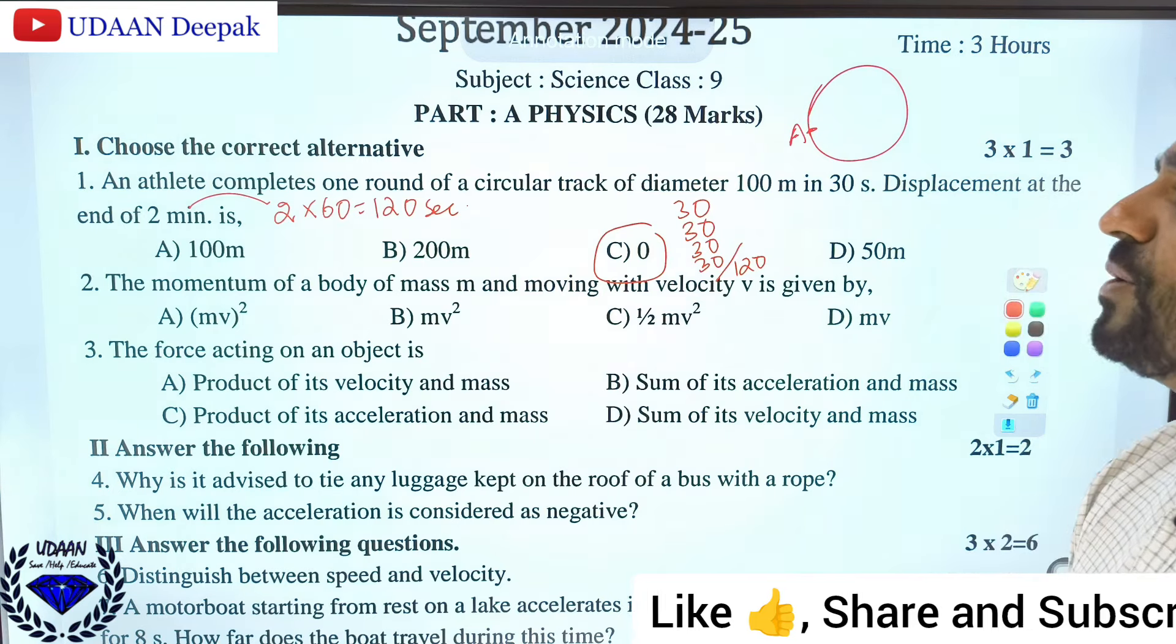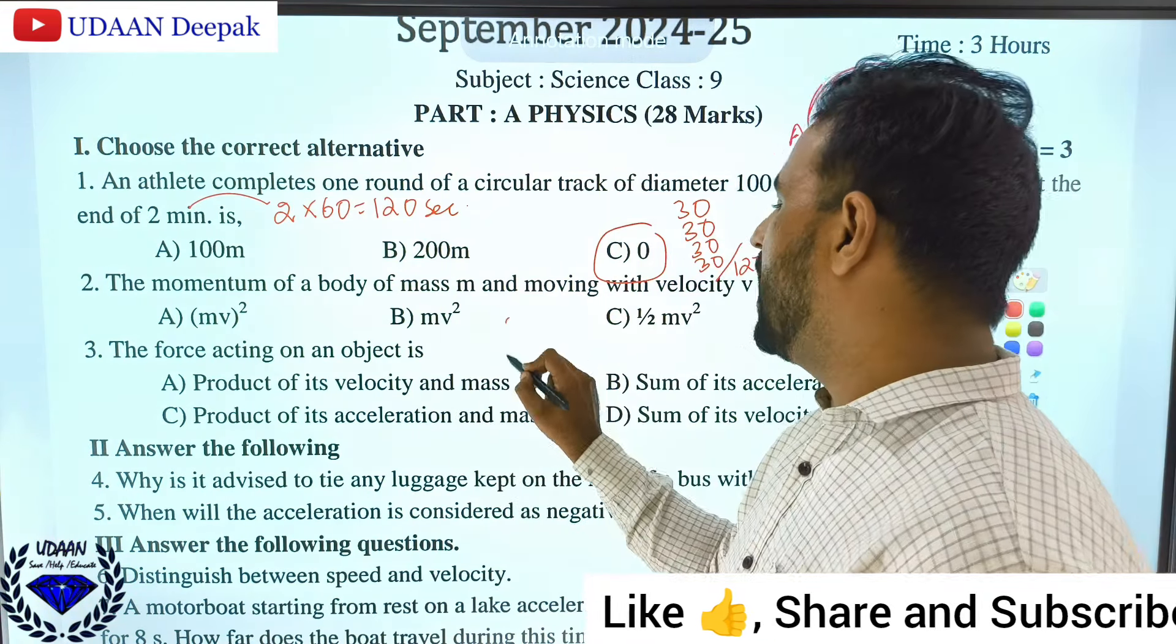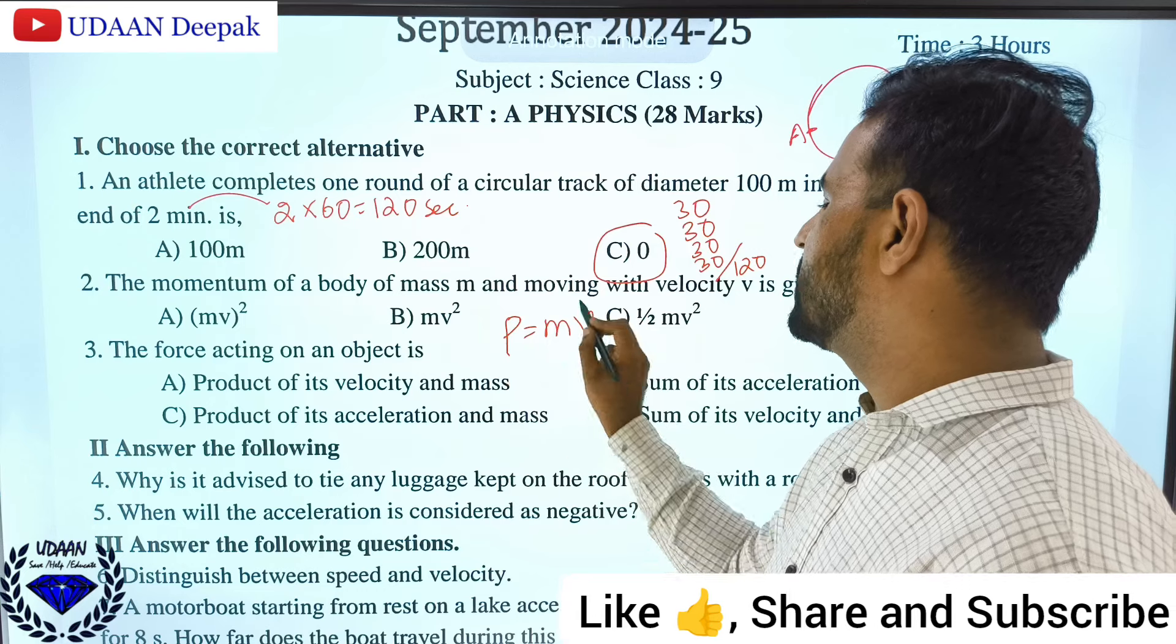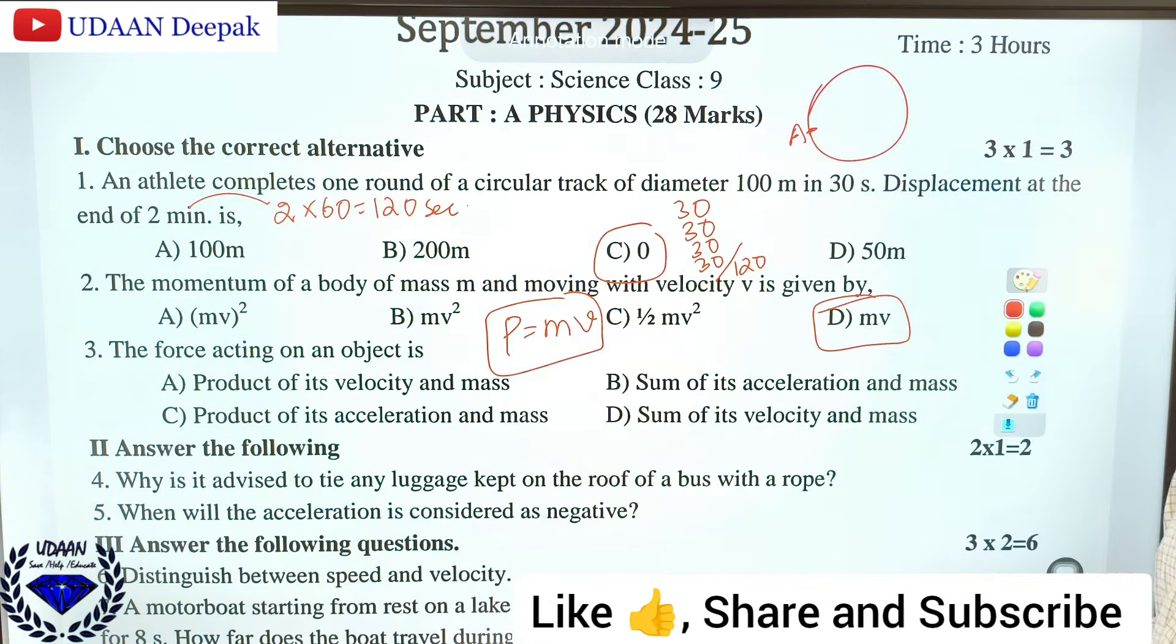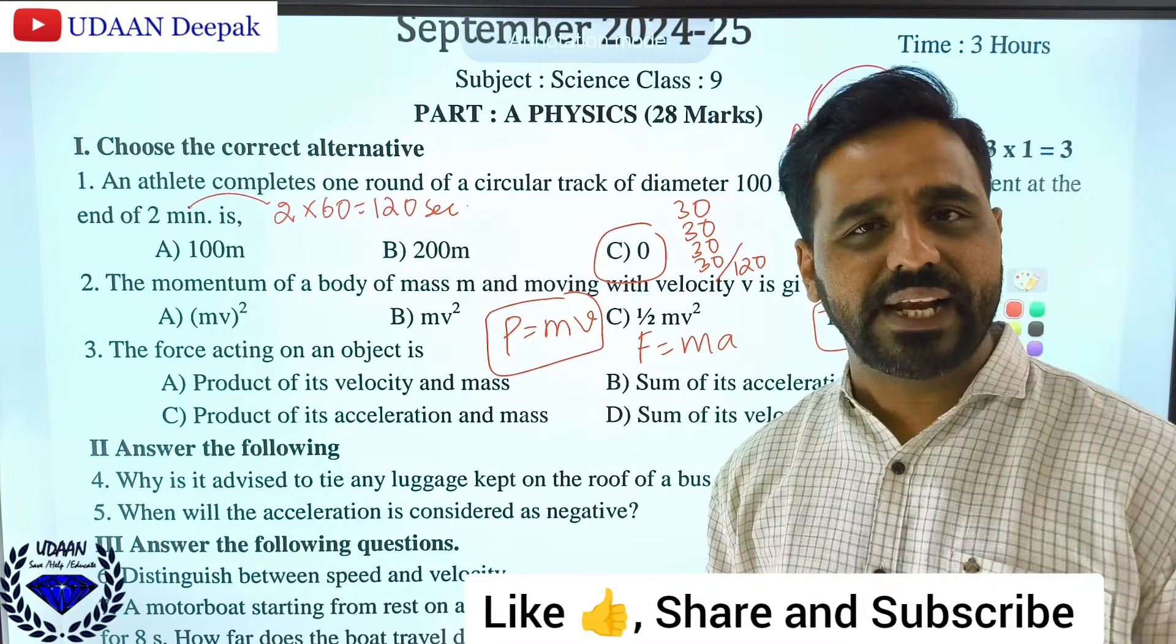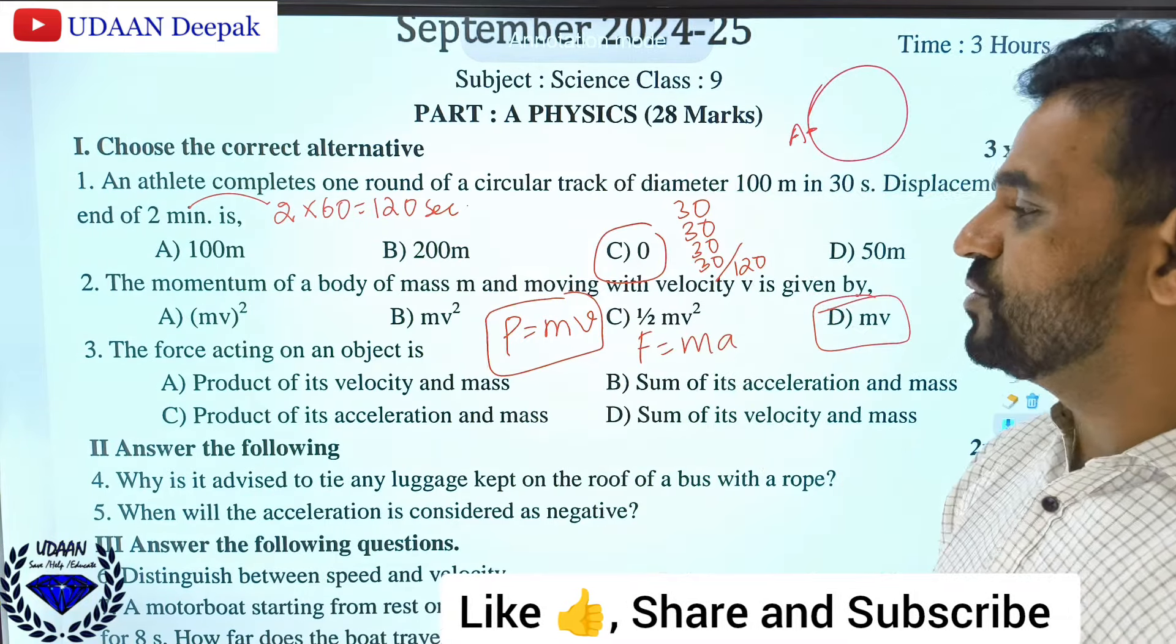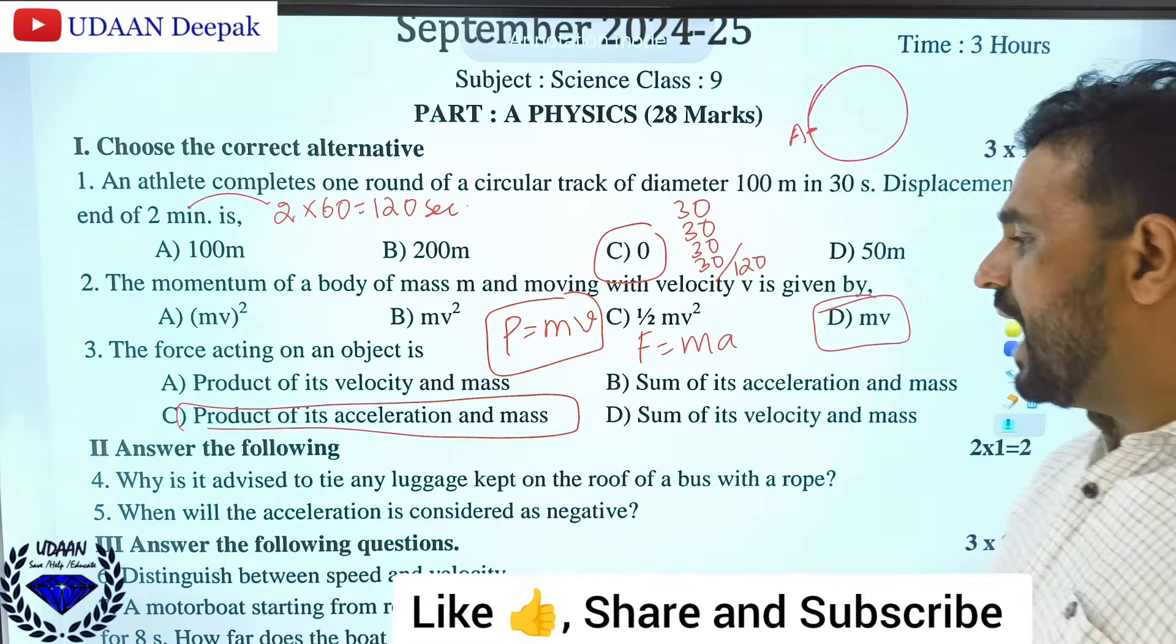The momentum of a body of mass m moving with velocity v is given by p equals mass into velocity, so the right answer is option D. The force acting on an object is F equals mass into acceleration, according to Newton's second law of motion, so the answer is product of its mass and acceleration.